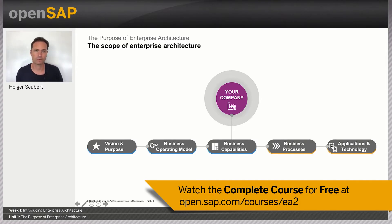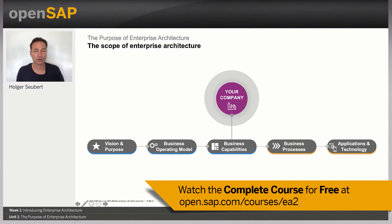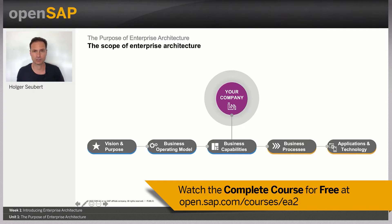One very basic building block is the so-called business capabilities of every company. Business capabilities describe what a company is capable of doing. There are business capabilities found in basically every company, such as human resources or financing and accounting. There are also business capabilities that can be considered more industry-specific, such as research and development.